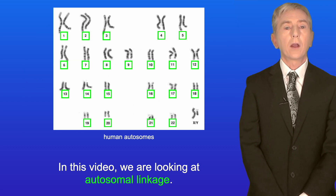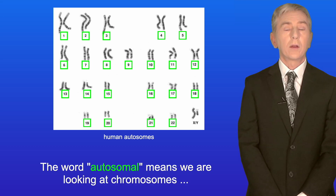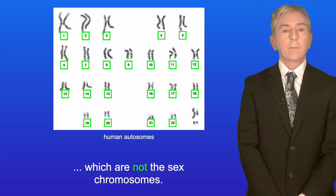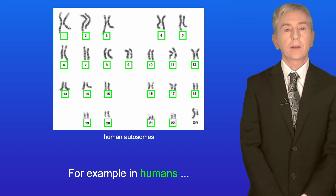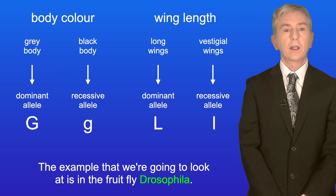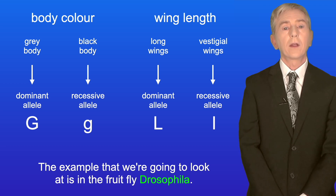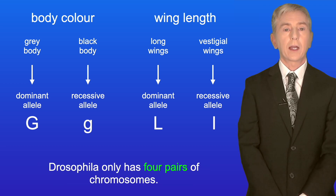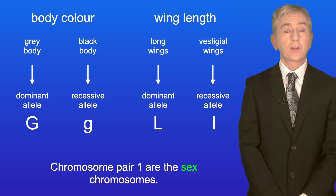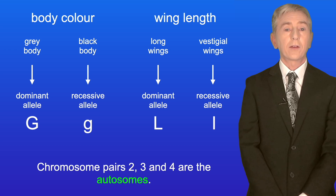In this video we're looking at autosomal linkage. The word autosomal means we're looking at chromosomes which are not the sex chromosomes — for example in humans the autosomes are chromosome pairs 1 to 22. The example we're going to look at is in the fruit fly Drosophila, which only has four pairs of chromosomes. Chromosome pair 1 are the sex chromosomes, and chromosome pairs 2, 3, and 4 are the autosomes.